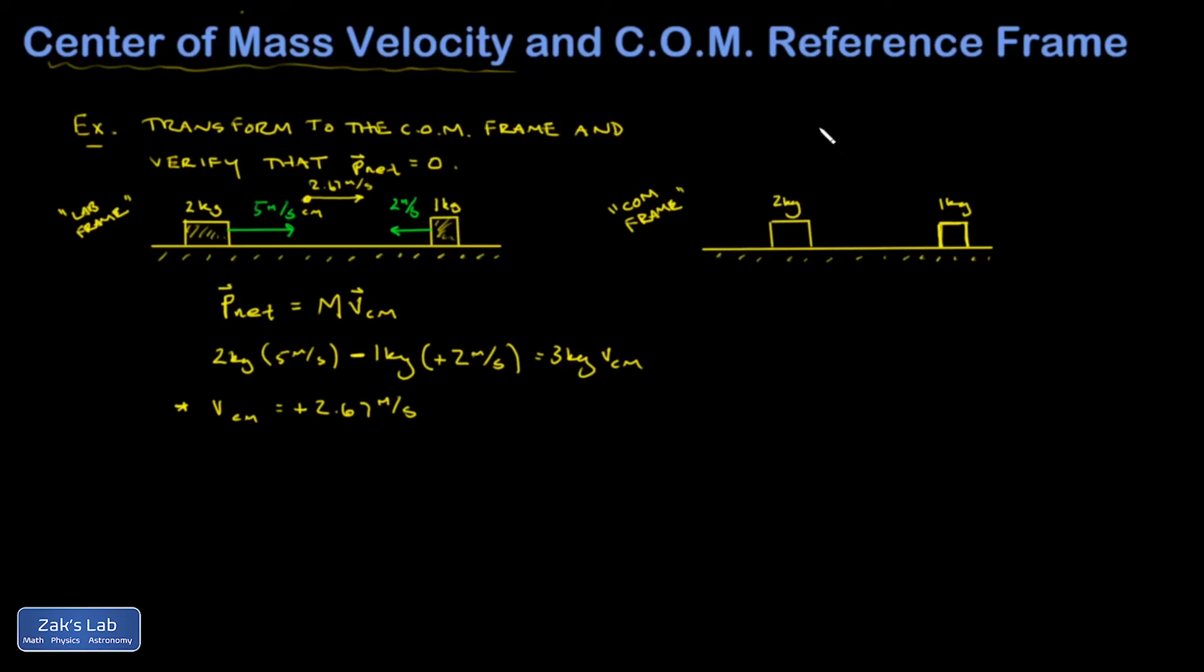So let's draw a new picture. All right, here we are in the center of mass frame. And again, what I'm doing is running to the right at 2.67 meters per second. That makes the rightward moving block move away from me slower than it did before. So I am subtracting to get there. The velocity of this block is now going to be 5 minus 2.67 meters per second. In other words, 2.33 meters per second.